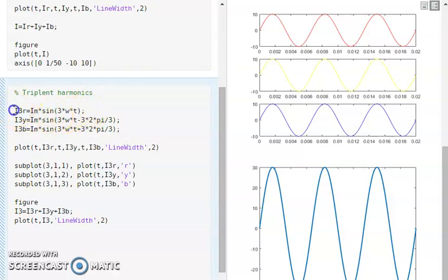The I3 represents the triplet and R represents the R phase. So the current becomes IM sin(3ωt) whereas the triplet harmonics on Y phase becomes IM sin(3ωt - 3×2π/3). And similarly the triplet harmonics in the B phase is IM sin(3ωt + 3×2π/3).